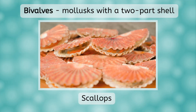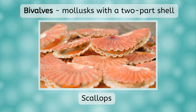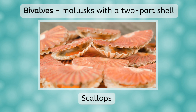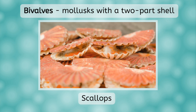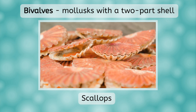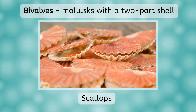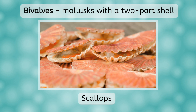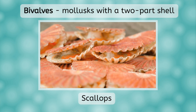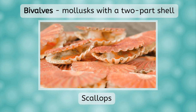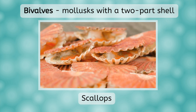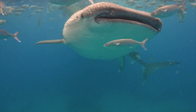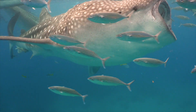Bivalves are built just like their name sounds. They are aquatic animals that have a two-part shell that can open and close. Bivalves have a heart, mouth, intestine, gills, and stomach, but lack a head. They have a muscular foot to anchor to the ground or sand, and most species have gills that allow water to flow through where mucus traps food — a process called filter feeding. The whale shark and blue whale are two other examples of filter feeders, which we'll learn about later in this unit.